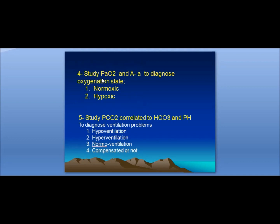Number four: the oxygenation state of the lung is studied through FiO2 and PaO2, using the alveolar-arterial gradient formula to diagnose whether oxygenation is normal or hypoxic. Number five: the ventilation state is studied through the partial pressure of carbon dioxide correlated with bicarbonate and base excess — to determine whether the patient is hyperventilated, hypoventilated, normally ventilated, or compensated.